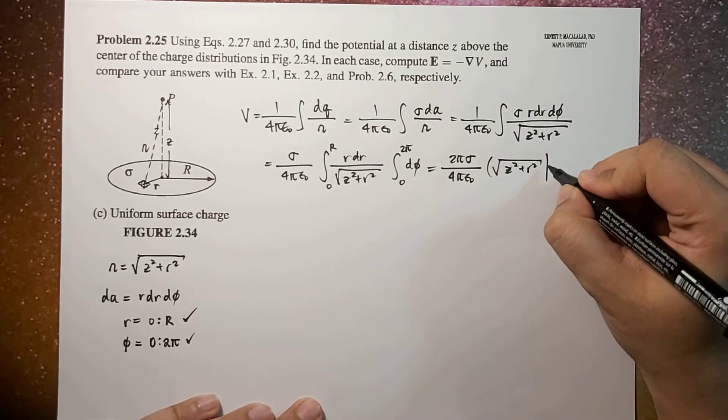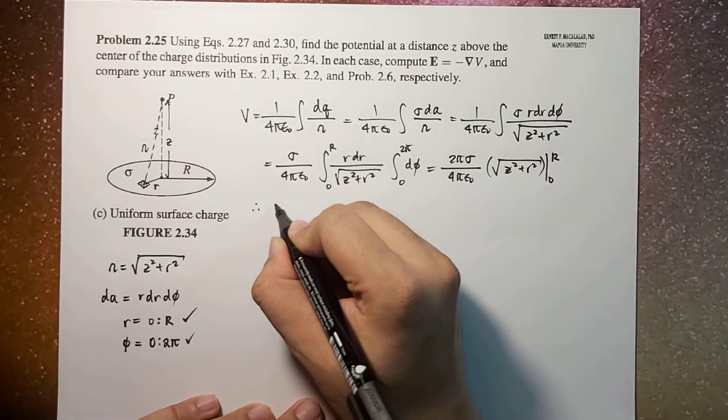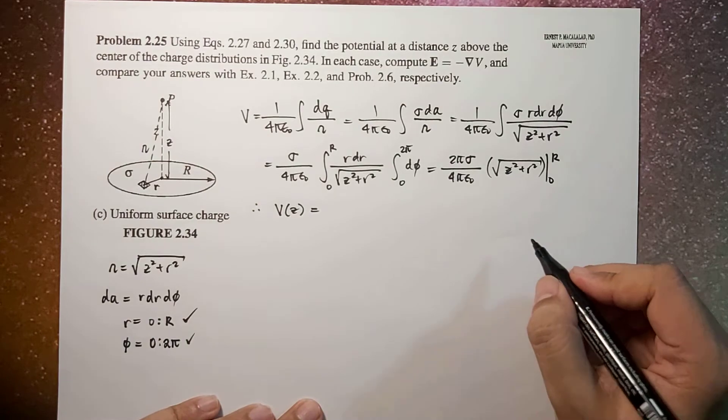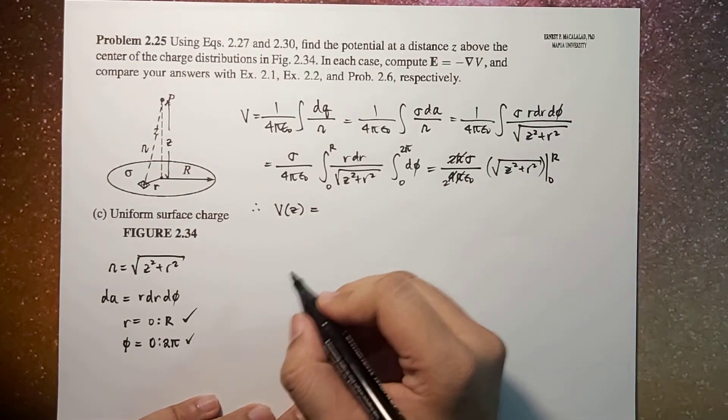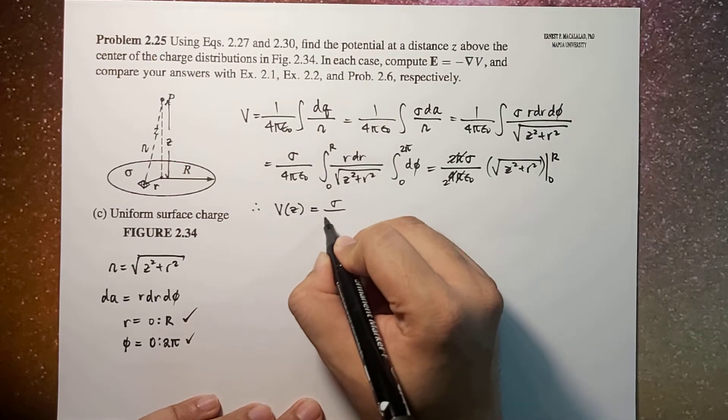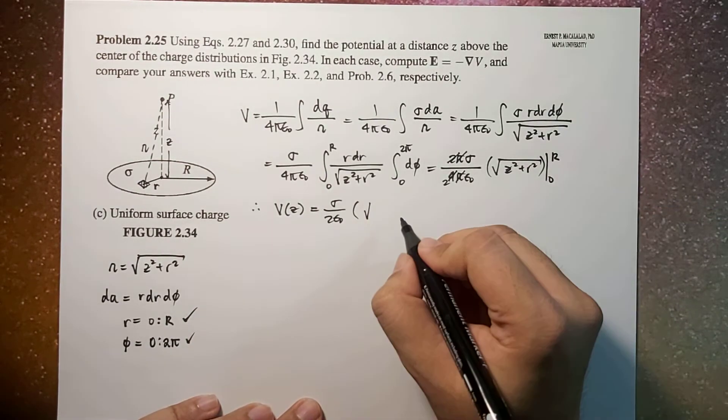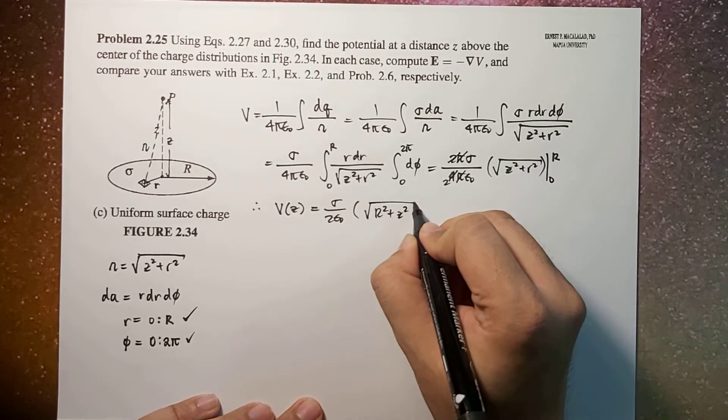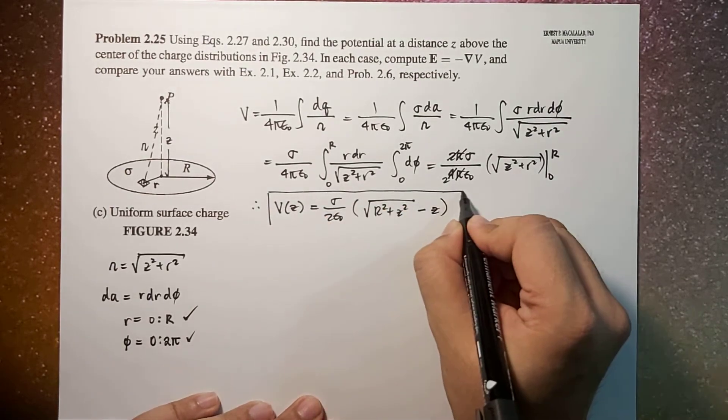Evaluated from 0 to r. Therefore, the potential which is a function of z is equal to, 2π will cancel, so this is sigma over 2 epsilon times square root of r plus z squared minus z. This is your potential.